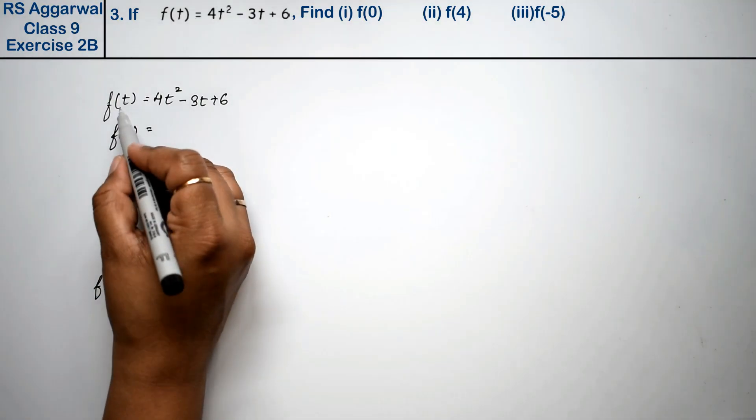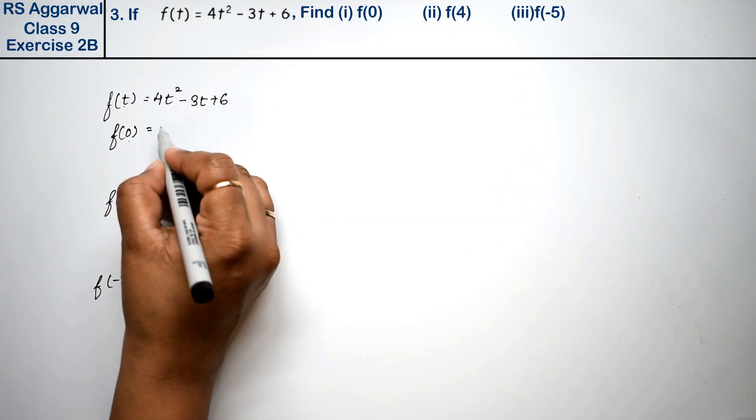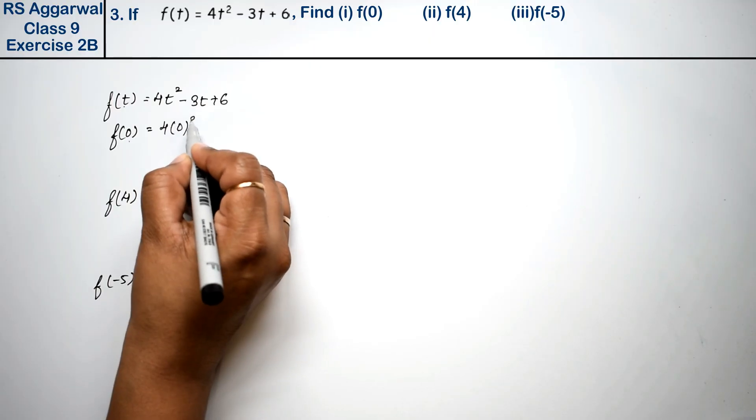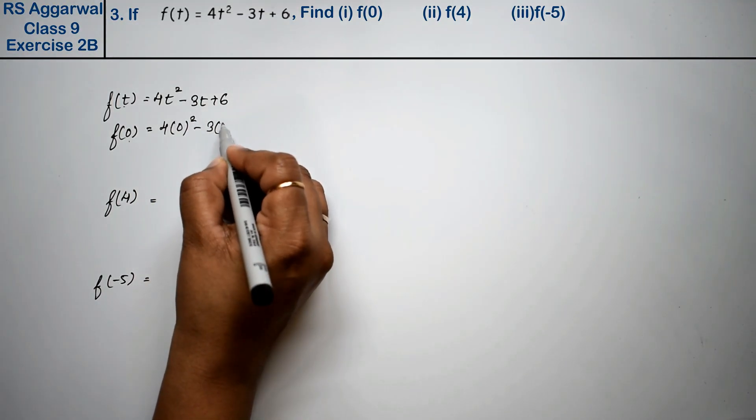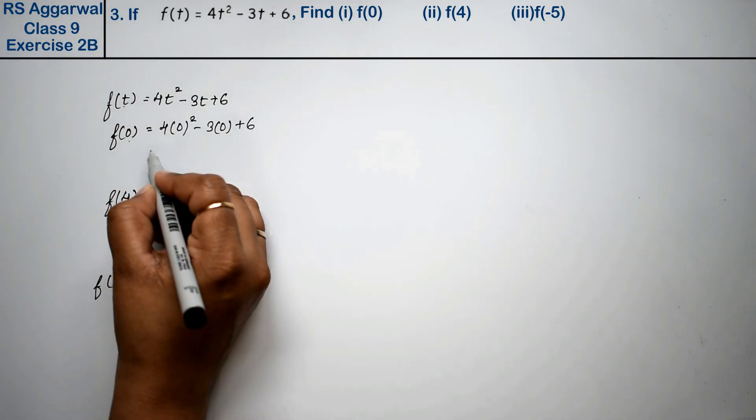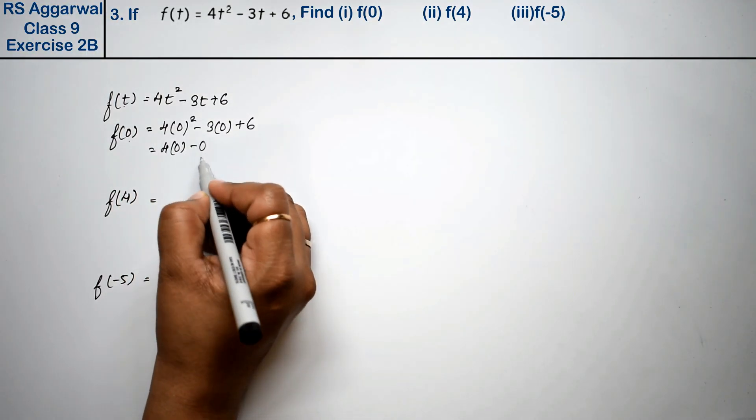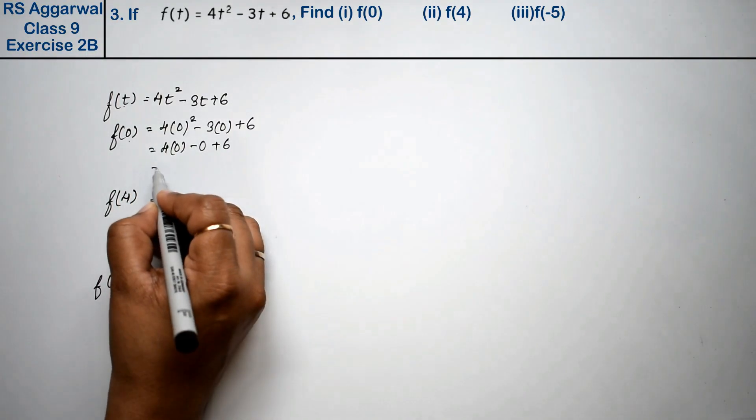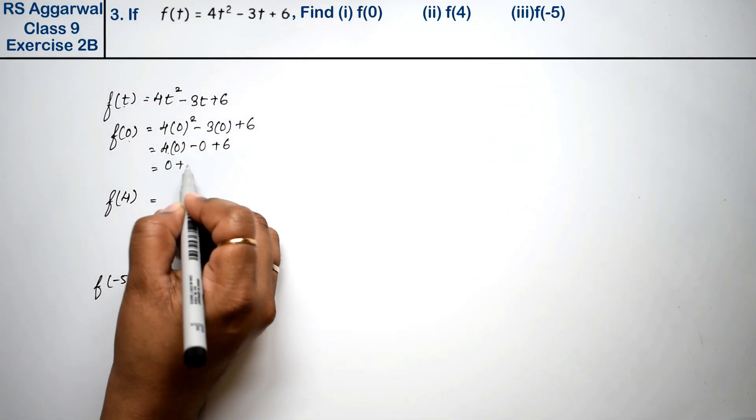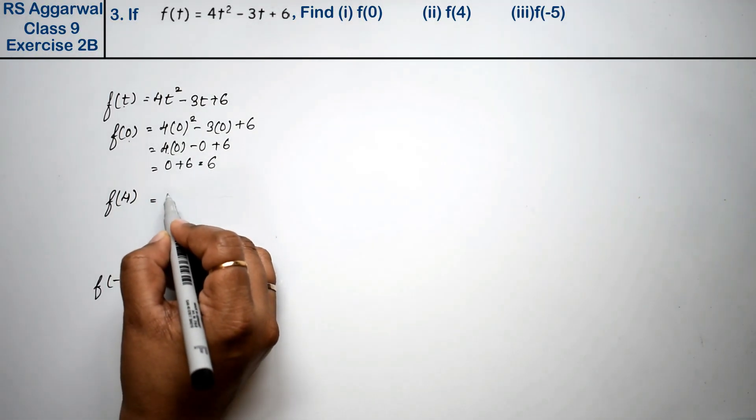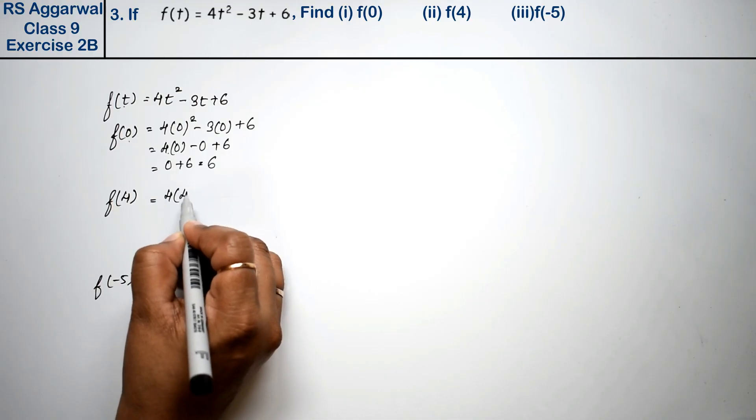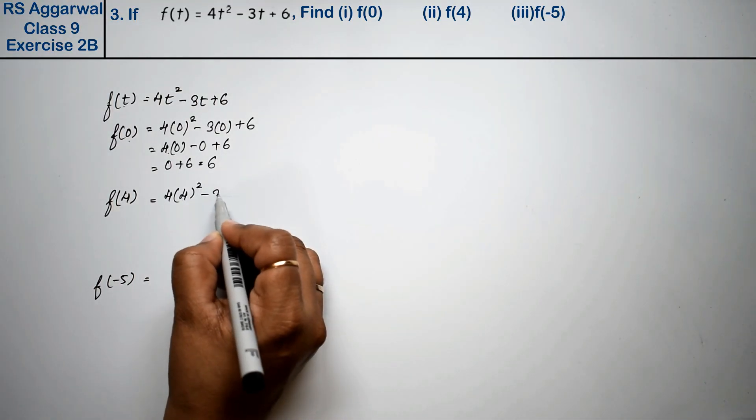First, f(0). We substitute 0: 4(0)² - 3(0) + 6 = 0 - 0 + 6 = 6. So f(0) = 6 is the answer. Now for f(4): 4(4)² - 3(4) + 6.